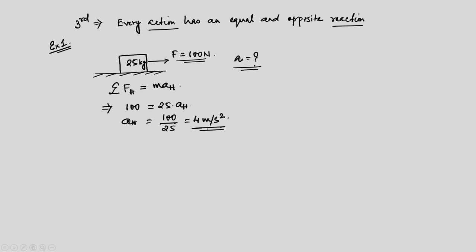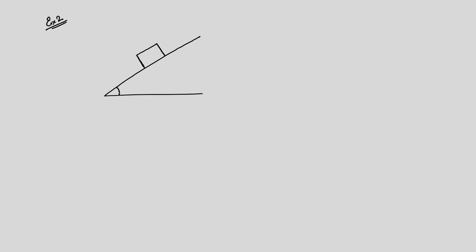You can easily correlate the applied force to the acceleration the body is going to experience. Let us take a different example — Example 2. We have a body over an inclined surface, and in this case we have friction.